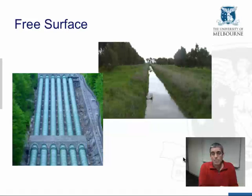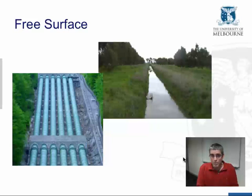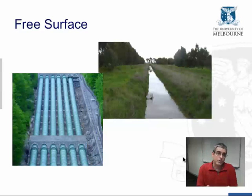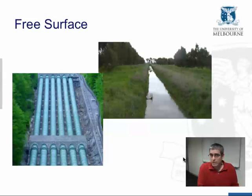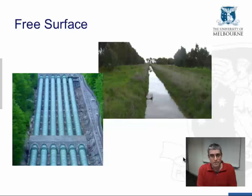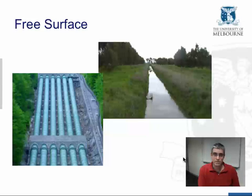That's different from a pipe because in a pipe you can get pressure varying all the way along the pipe. What makes things harder is that the level of the surface of the channel — the water level — can vary. Obviously that's different from a pipe where it's fixed, but in a channel it varies. So that introduces a new variable in our hydraulic analyses: the stage, which is the level of the water surface.